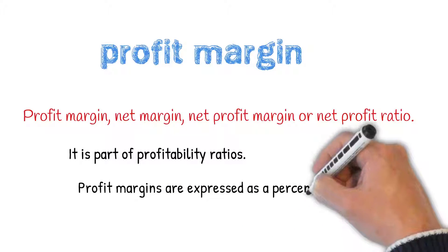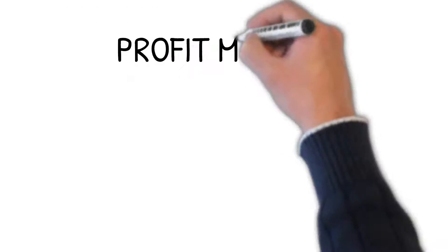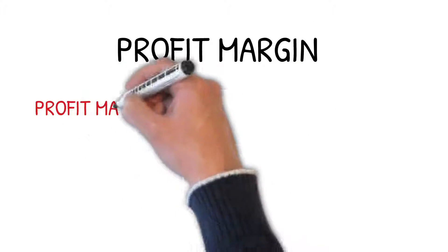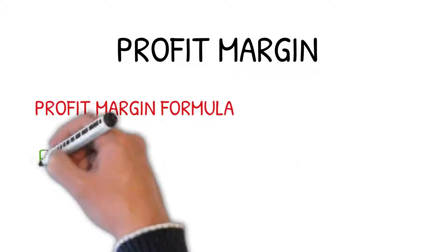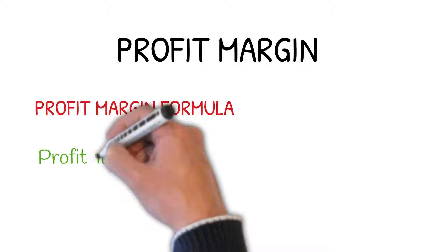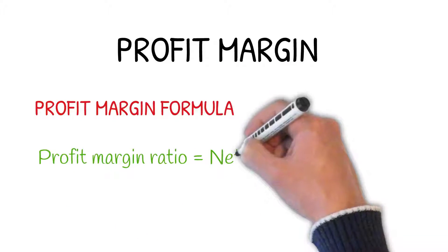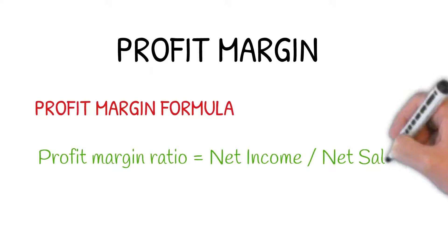Profit margins are expressed as a percentage. The formula of profit margin is equal to net income divided by net sales. For the calculation of profit margin, we need to find first net sales and net income.